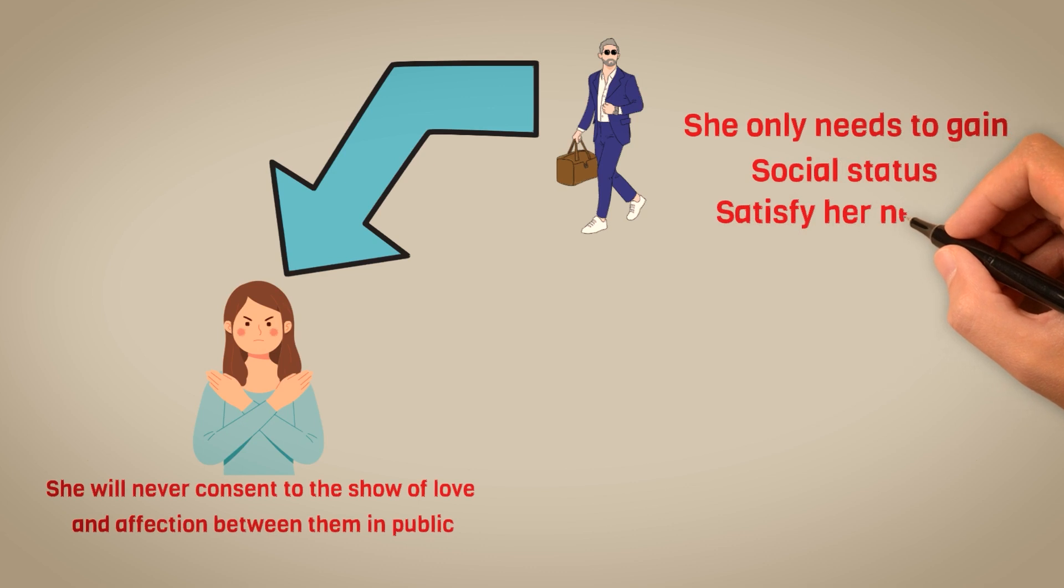The sigma male ought to discern and recognize this pattern, so he can decide whether he desires a relationship that is built on transparency, love, and mutual respect.